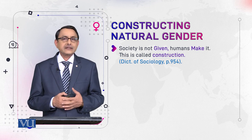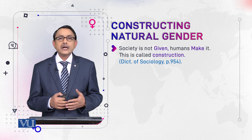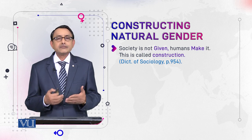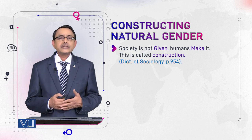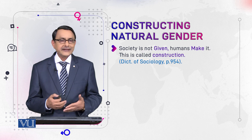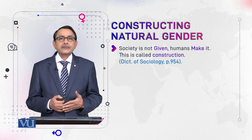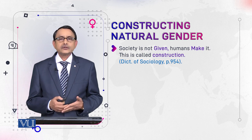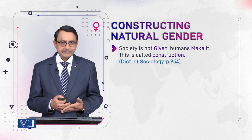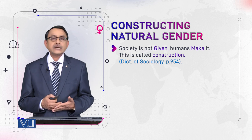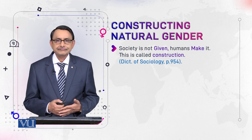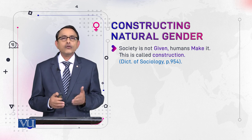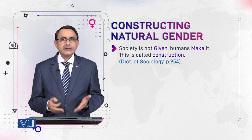Humans make society; it is not something that exists on its own, and it is not static — it is dynamic. Because humans are dynamic, they make society, and so society is also dynamic. This is called construction: society is constructed by humans, they make it, they build it.